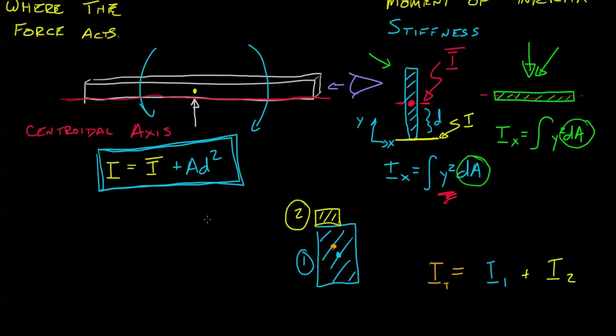Now you might be tempted to just list, let's say the moment of inertia of one is, say, ten normally, right? But that is about this axis. Now you need to figure out what is the moment of inertia of one about this axis, about the total axis.